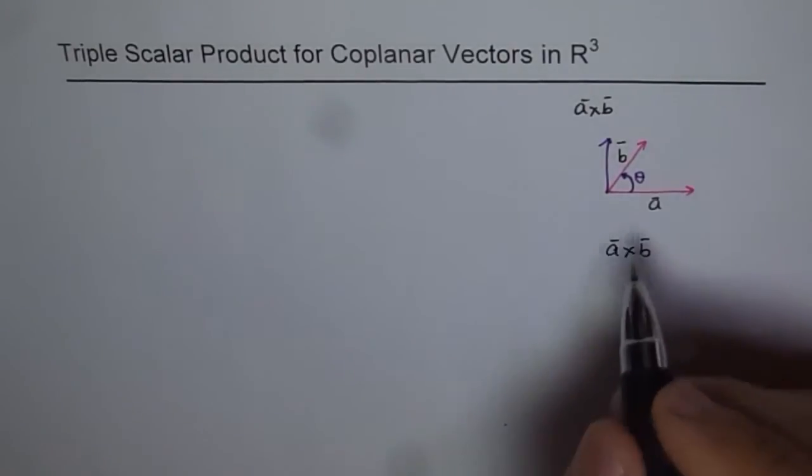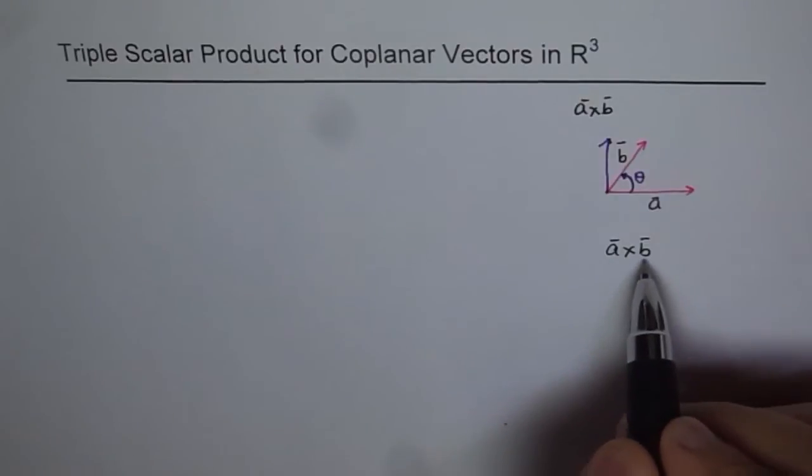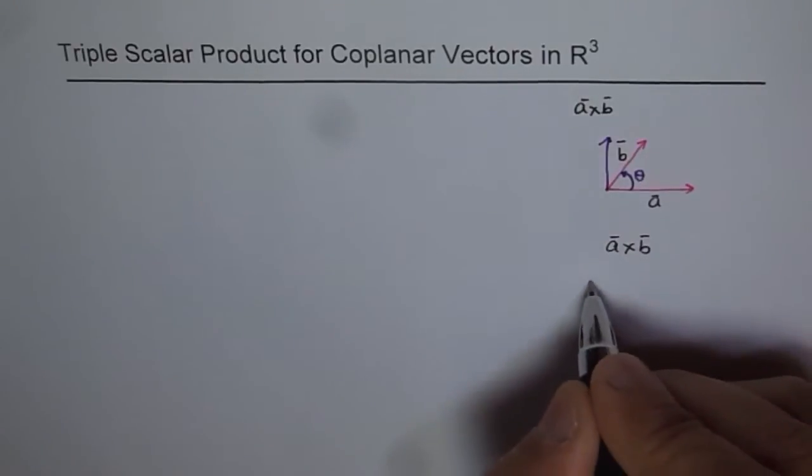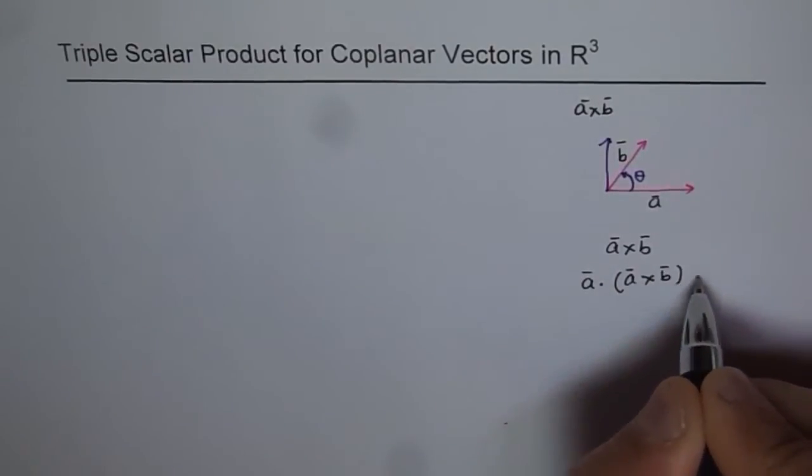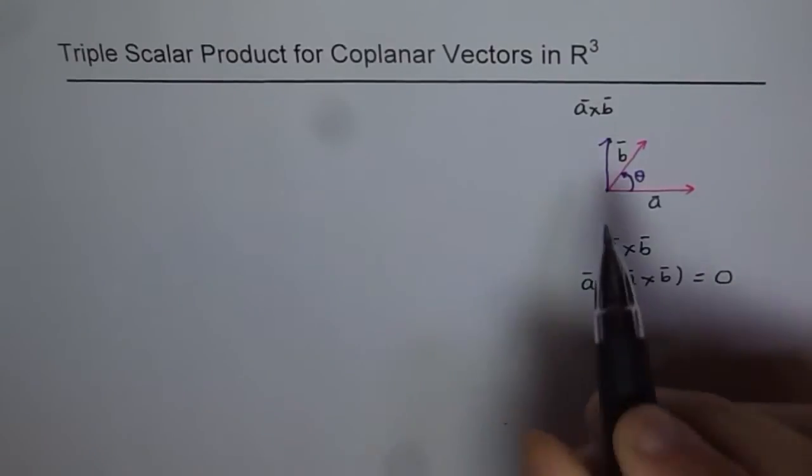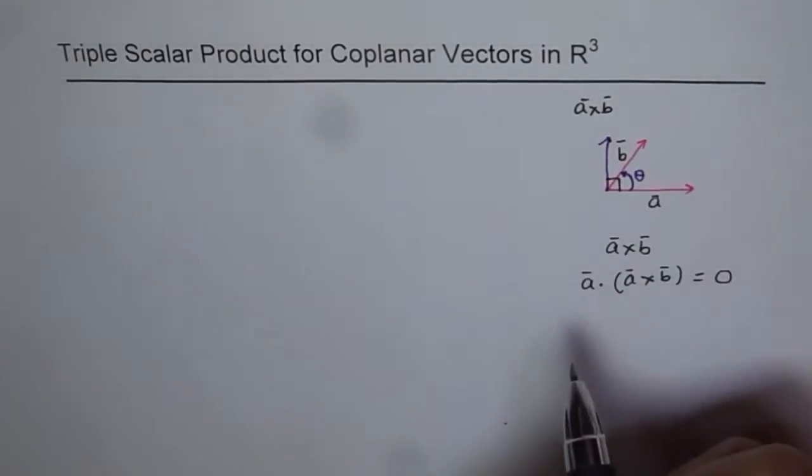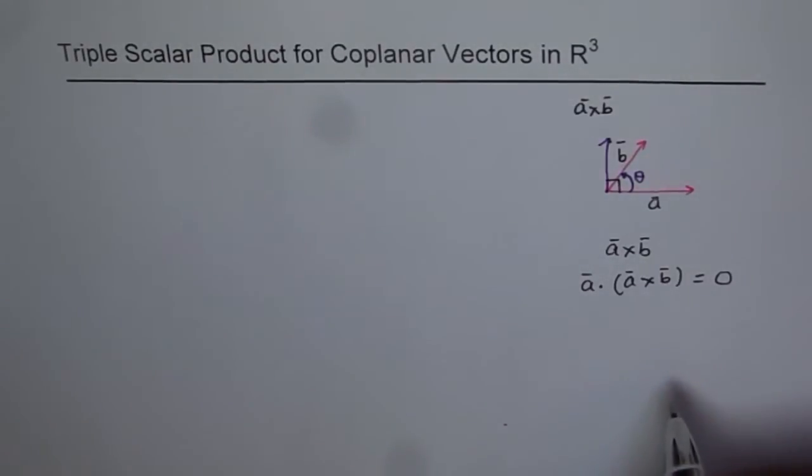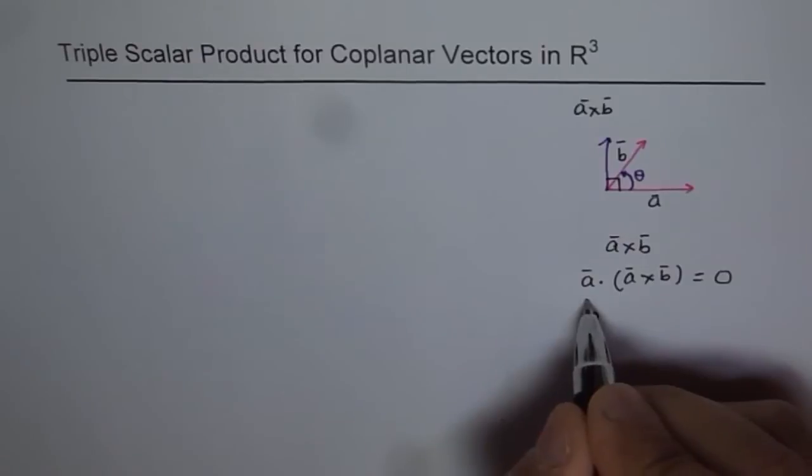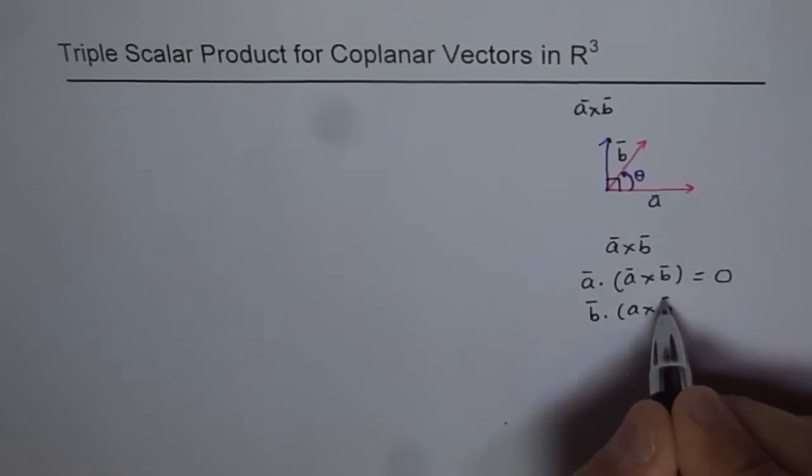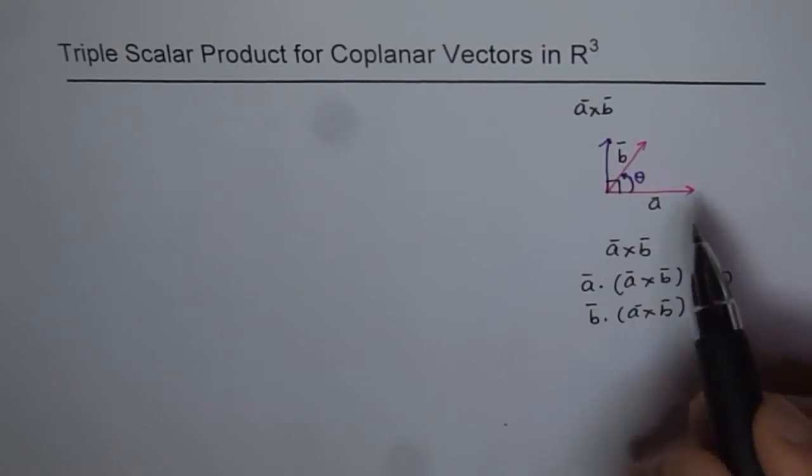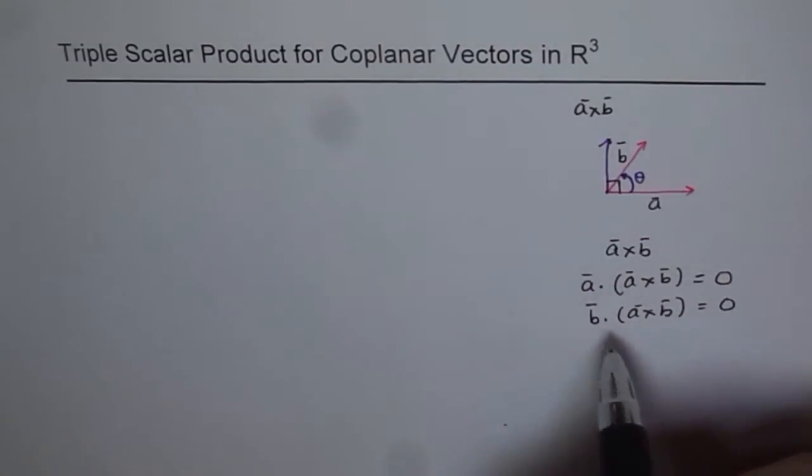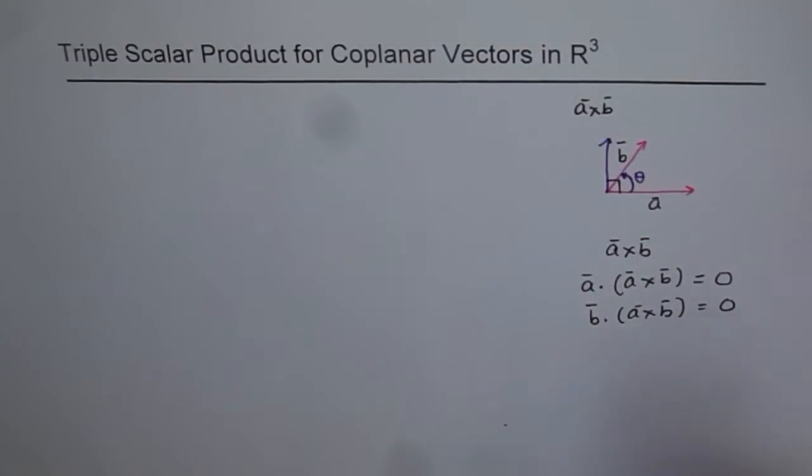Now it also means that if I do dot product of vector A with A cross B, I should get zero. If I do A dot (A cross B), I should get zero, since A cross B is at right angles to A and dot product with right angles is zero. Similarly, if I do B dot (A cross B), I should get zero. Since B is in the plane of this paper and A cross B is perpendicular, these two vectors are perpendicular and therefore the dot product with A cross B will be zero.